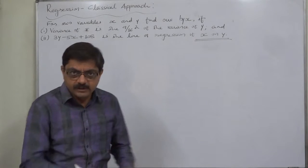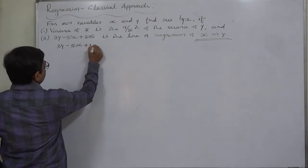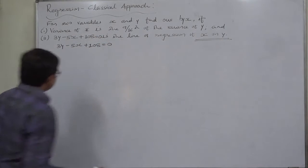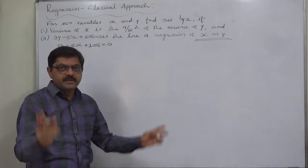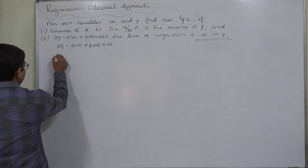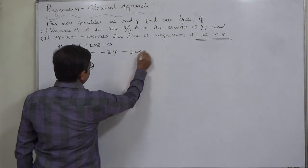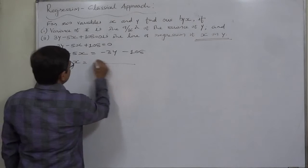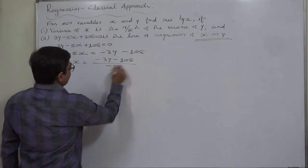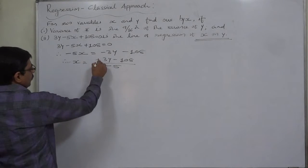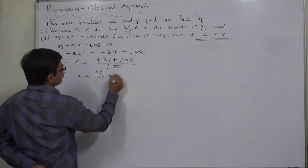Let's do it. 3y minus 5x plus 108 equals 0. That is the line of regression of x on y, and so the subject of the equation should be x. Let's make it. Therefore minus 5x equals minus 3y minus 108. Therefore x equals minus 3y minus 108 divided by minus 5.